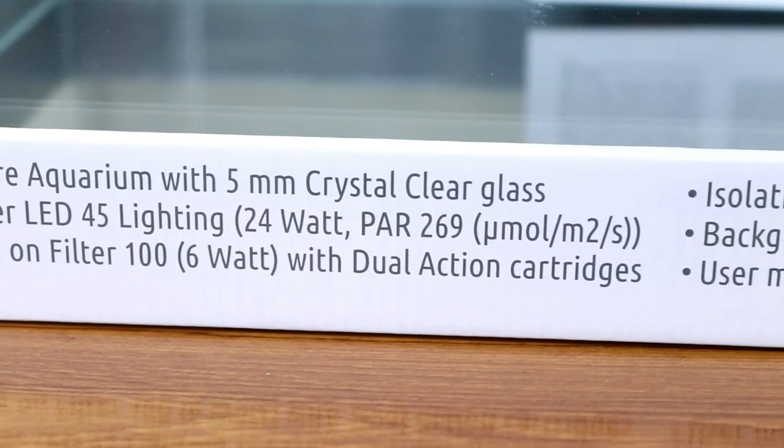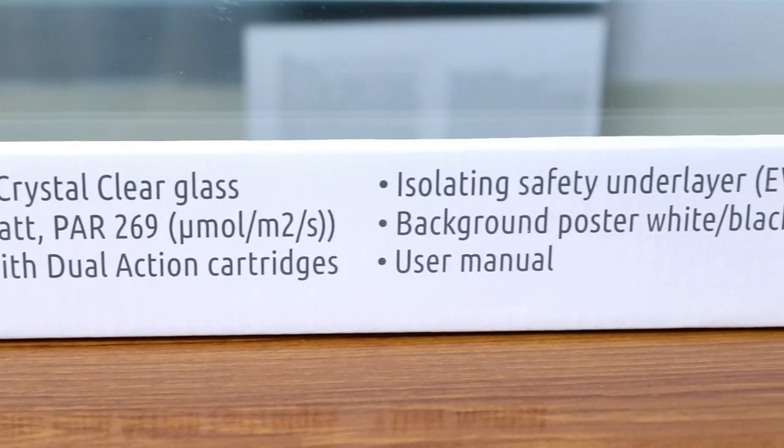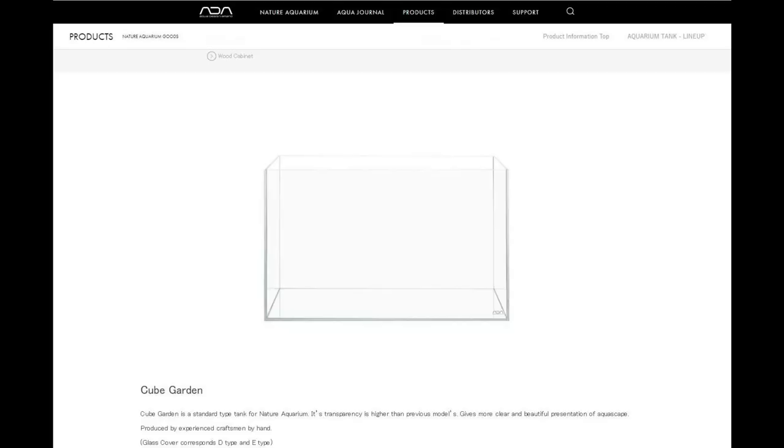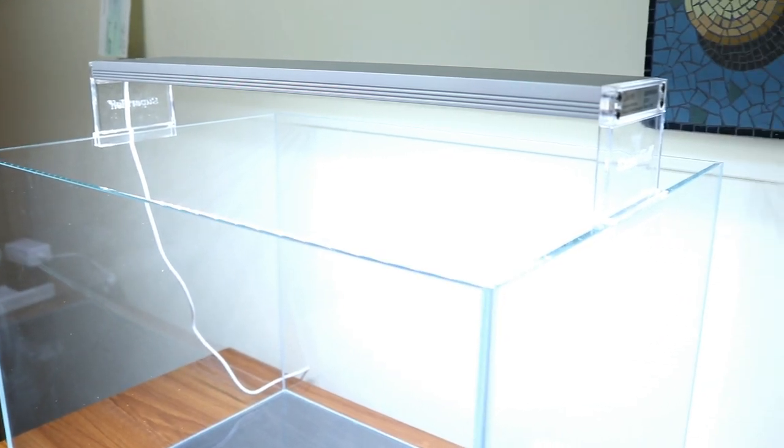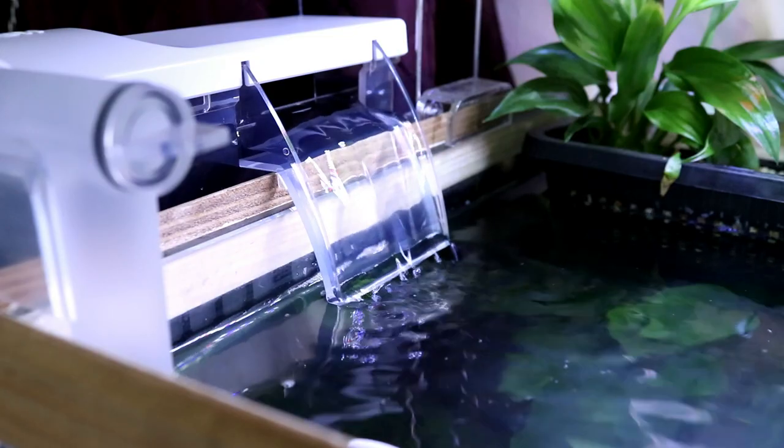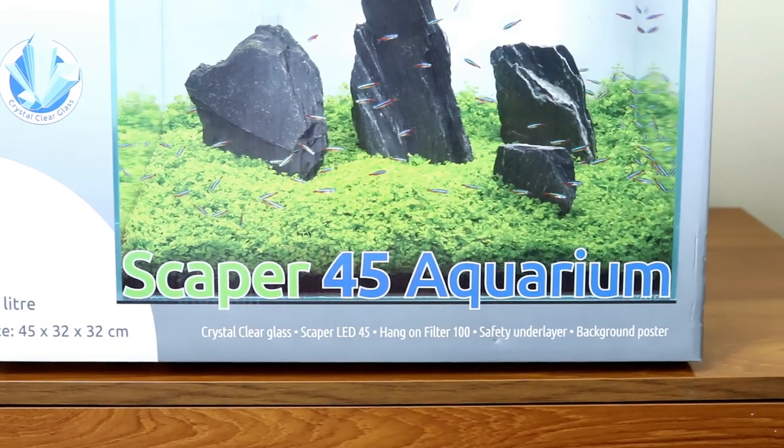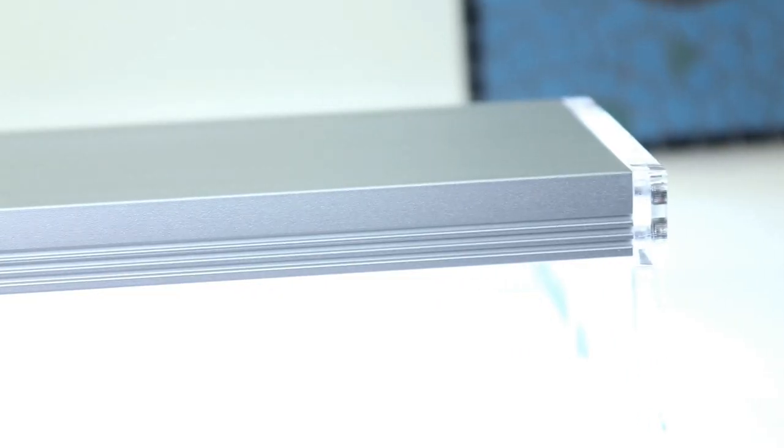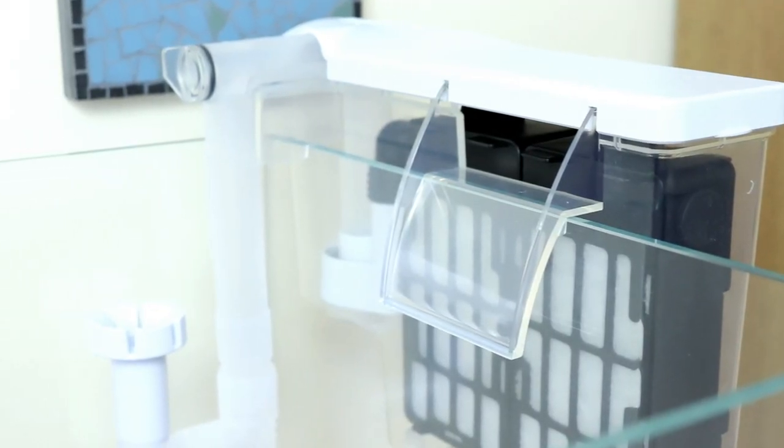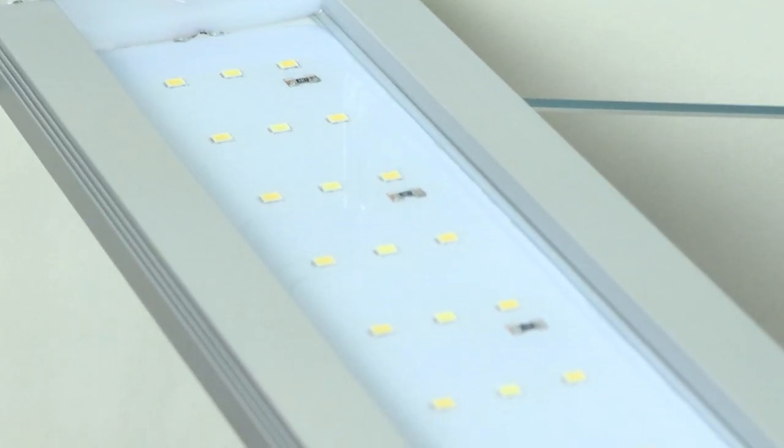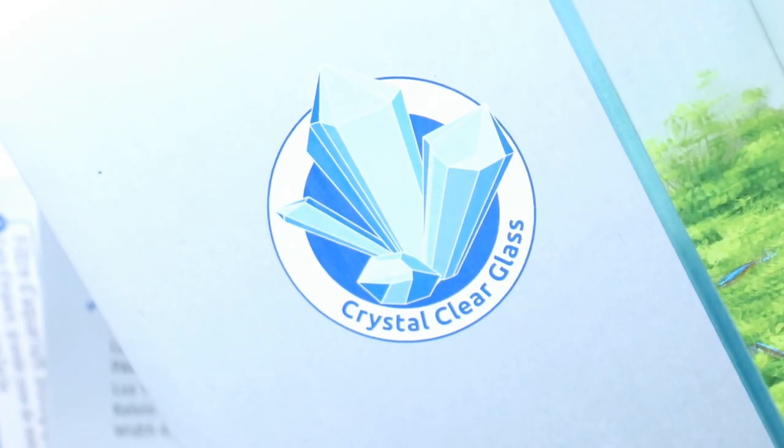And then of course you come to why it is likely you've been drawn to the tank in the first place, and that is the styling. It is easy to see how Superfish have very much emulated the ADA cube garden line, offering a very simple but very high quality aquarium in proportions that are very well suited to aquascaping, just without that associated ADA price tag, or the opti-white glass. The Scaper series are sleek and minimal, the light has an aluminum casing and clear sides, and the hang-on-back filter is as hidden as a filter can get without having the cost of a canister filter.